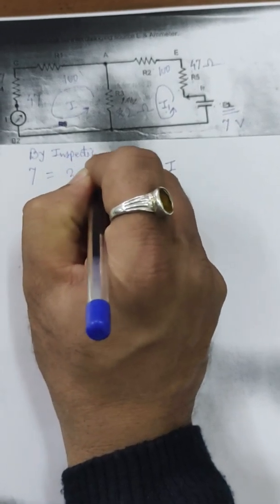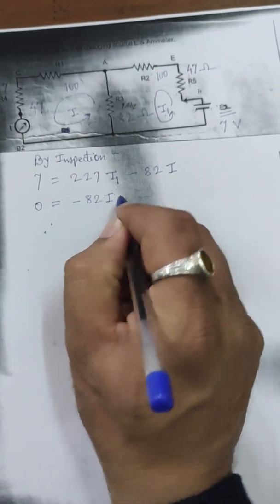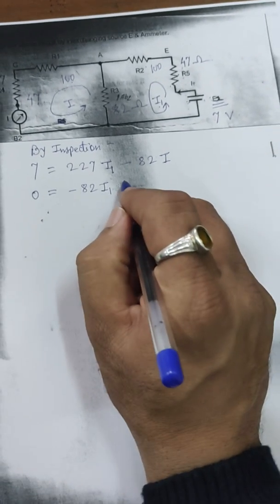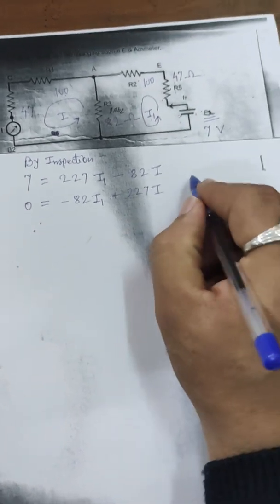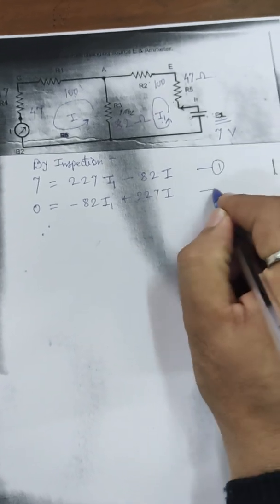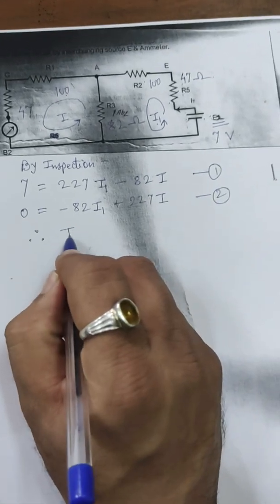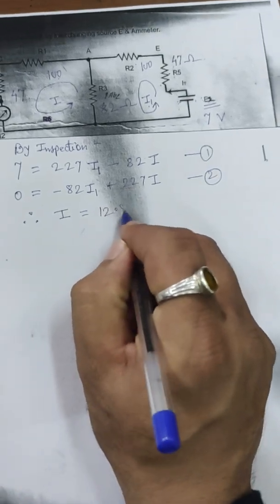By inspection, the equations for circuit 2 are: 7 = 227·I1 − 82·I (equation 1), and 0 = −82·I1 + 227·I (equation 2). Solving these two equations using a calculator, we need only the value of I. The result is I = 12.81 milliamperes — the same value as before.